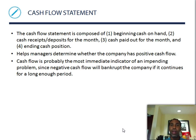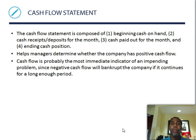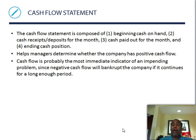The cash flow statement is composed of: beginning cash on hand, cash receipts or deposits for the month, cash paid out for the month, and ending cash position for the month. It helps managers determine whether the company has positive or negative cash flow. Negative cash flow is the most immediate indicator of impending problems — negative cash flow will bankrupt a company if it continues long enough.